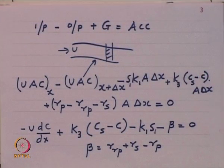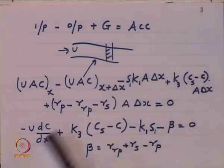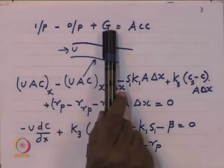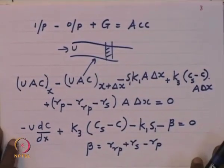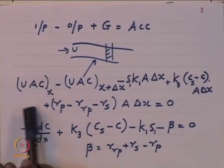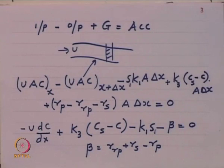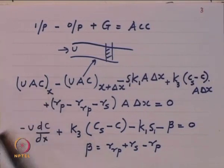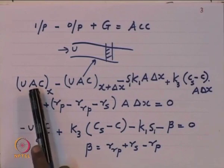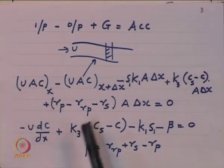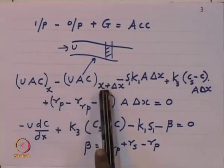We take an elemental volume of the river flowing at velocity u. The material balance has input, output, generation, and accumulation terms. Here c represents the dissolved oxygen in water, u is the velocity of water, and a is the cross-sectional area of the river at position x and x plus delta x.